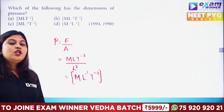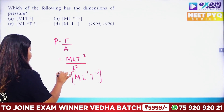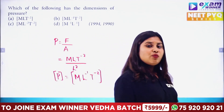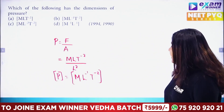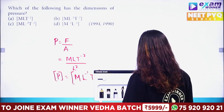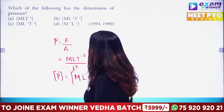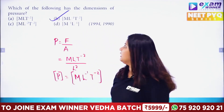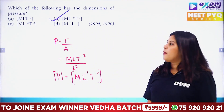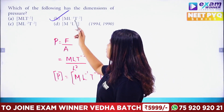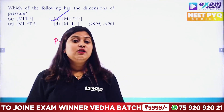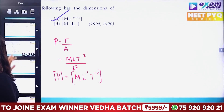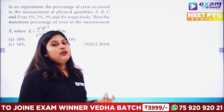The dimension of pressure is M·L⁻¹·T⁻². Option B is the correct answer. This is another very important and repeated topic.